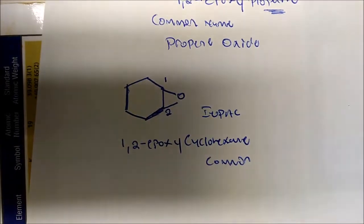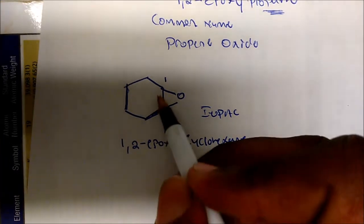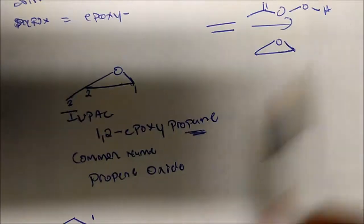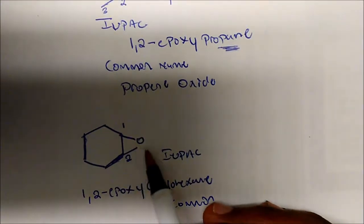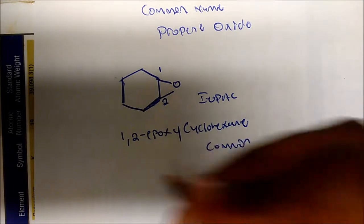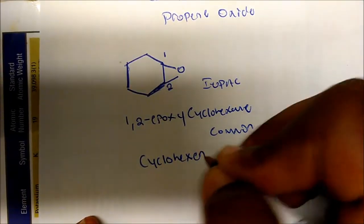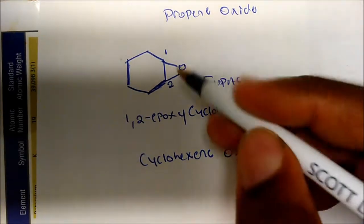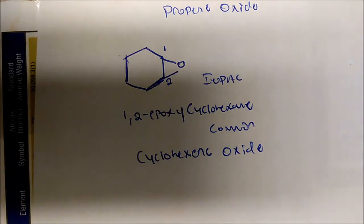What would be the common name for this? Again, we're going to pretend this was an alkene and that we used some sort of peroxy acid to convert it to an epoxide. So the common name would be cyclohexene oxide — 'cyclohexene' for the ring, and 'oxide' to symbolize the epoxide that's attached there.